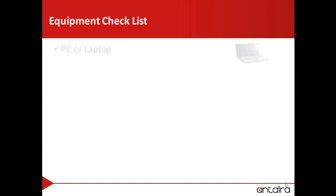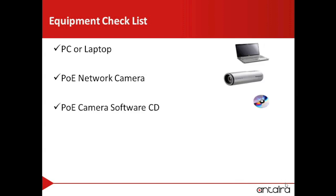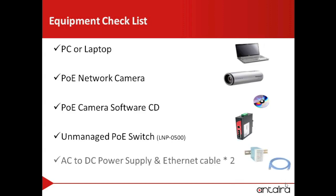First things first, you'll need a few things before starting your setup. Number one, a computer. Number two, your PoE camera. Number three, the software that came with your PoE camera — if you can't find this, contact the manufacturer and see if you can download the software online or have them send it to you via email. Number four, an unmanaged switch such as Anterra's LNP 0500. And number five, don't forget your AC to DC power supply or your Ethernet cables. If you don't have all these items, it may be in your best interest to stop the video and get them.